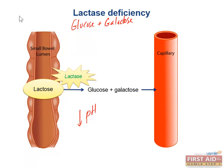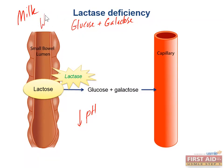What am I talking about? Milk. If you see on the boards that a patient is intolerant to milk — they get cramps, they get bloating — they could have a lactase deficiency. You may also see it with whey, which is another high lactose-containing food.